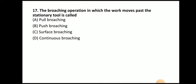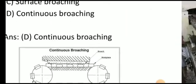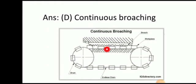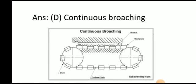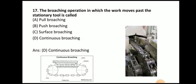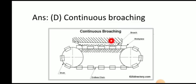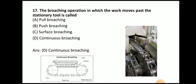Next question: broaching operation in which the work moves past the stationary tool is called — pull broaching, push broaching, surface broaching, or continuous broaching? The answer is continuous broaching. In continuous broaching the broach is stationary while the workpiece moves past it.